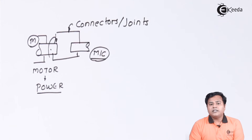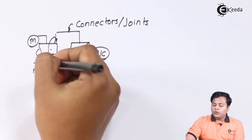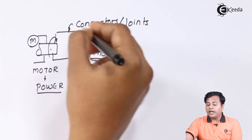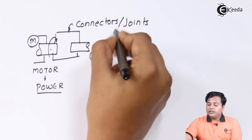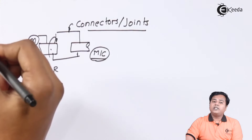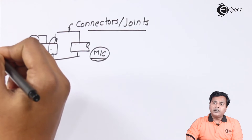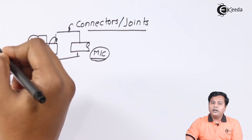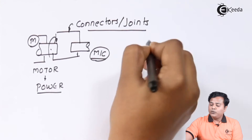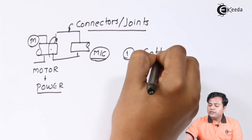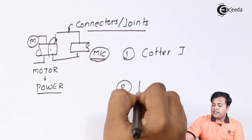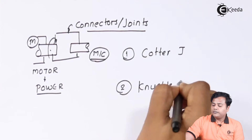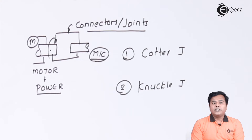These connectors take the load or power from the motor and deliver it to the shaft of the machine. Hence, the design of connectors and joints is very important. The first connector we are going to look at is the cotter joint, and the second is the knuckle joint. Let us start with the cotter joint design aspect.